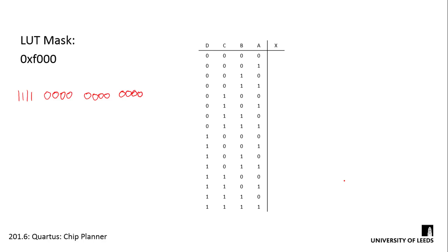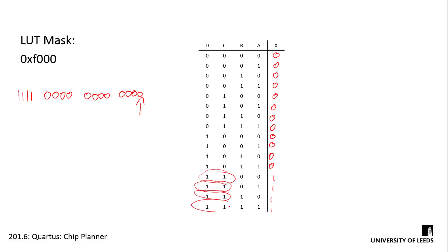Looking at the lookup table itself, we have our four inputs. Notice that I've reversed the order in our truth table — this is because for the lookup tables, A counts as your least significant bit. So we've got D, C, B, A. Now if we take this lookup mask and transpose it into the lookup table starting from the least significant bit — 0, 0, 0, 0, 0, 0, 0, 0, 0, 1, 1, 1 — we can see that our values are 1 each time that C and D are 1.